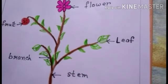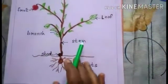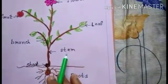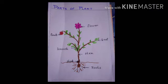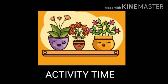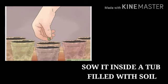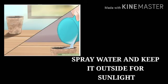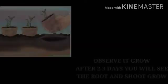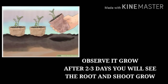I think you have understood the parts of the plant. Your homework is to draw the parts of the plant and label them. Also, take some chickpeas and sow them inside a tub filled with soil. Spray some water, keep it outside for sunlight, and observe it grow. After 2-3 days you will see the root and shoot grow.